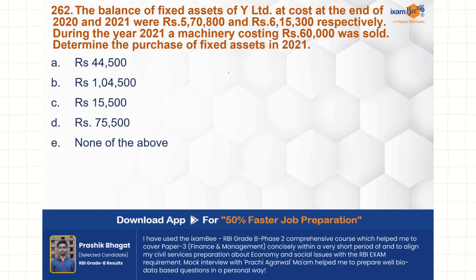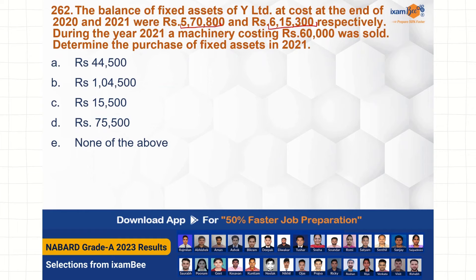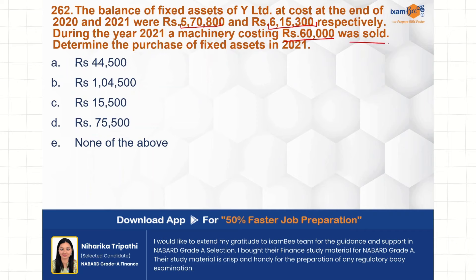The balance of fixed assets of While Limited at cost at year-end 2020 and 2021 is 5,70,800 and 6,15,300 respectively. During 2021, a machine costing rupees 60,000 was sold. We need to determine the purchase of fixed assets in 2021.